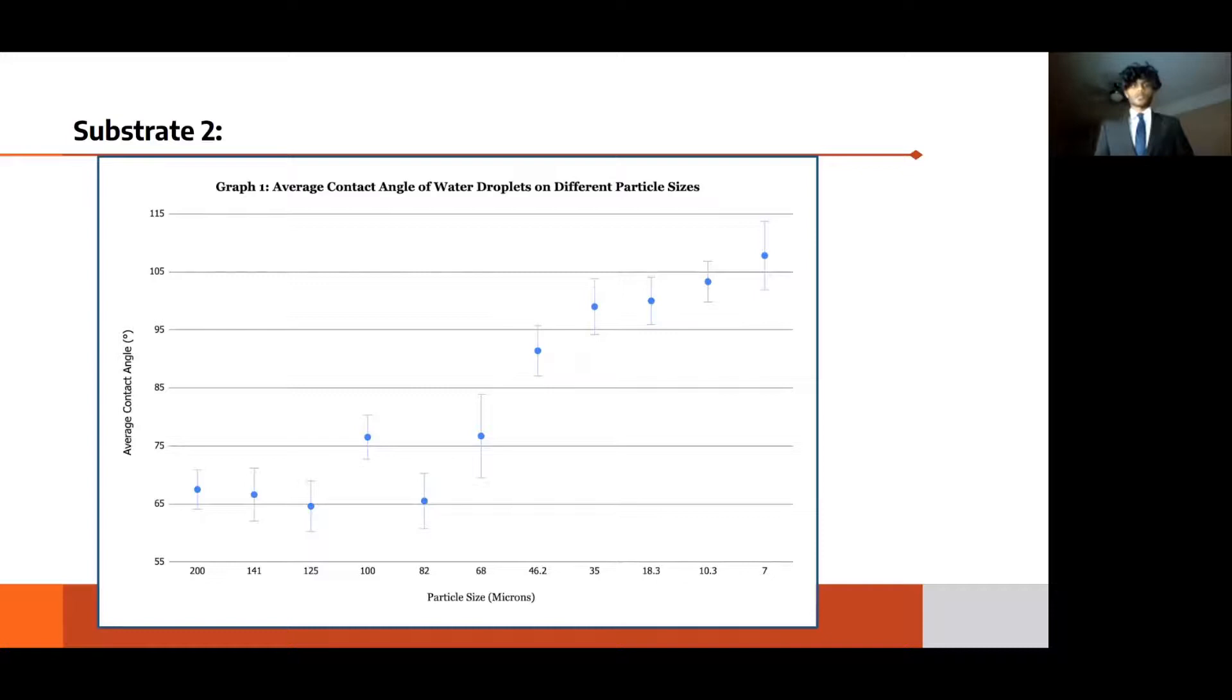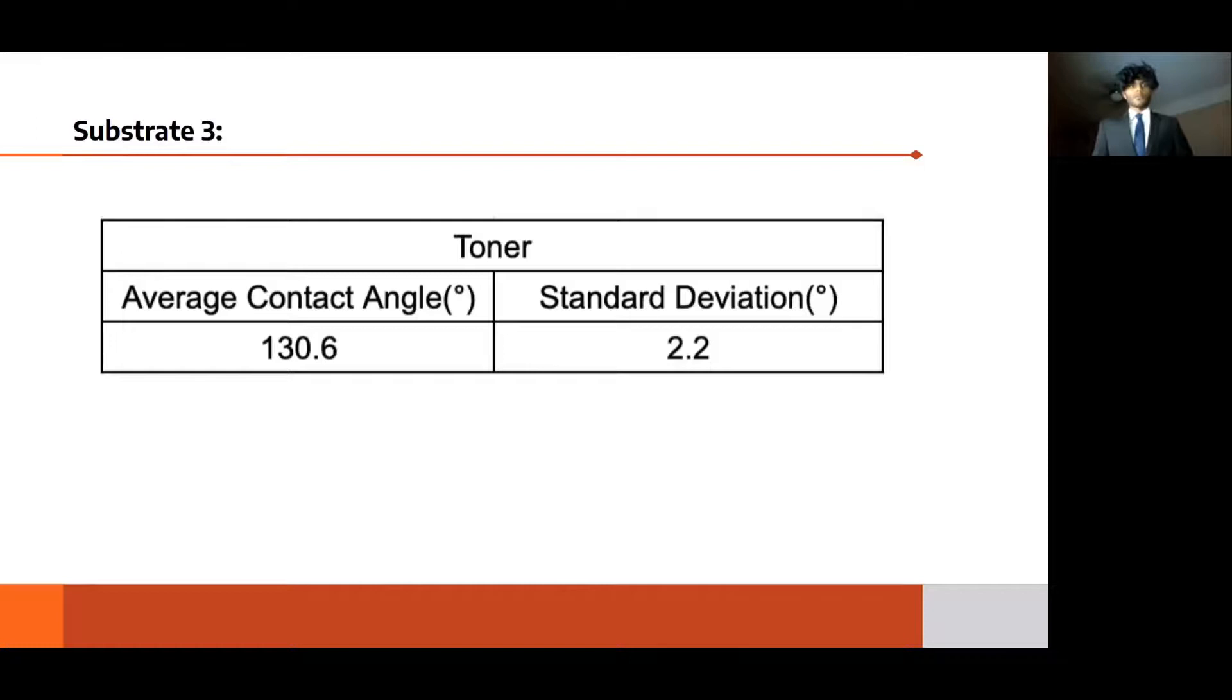The imprints from sandpapers of larger particle sizes, specifically those from 68 to 200 microns, caused an adverse effect that made the surfaces more hydrophilic. This is most likely because the air pockets formed were large and not small enough to essentially hold the water molecule droplets up. This error can be attributed to the variable pillar heights, widths, and spacings on coarser sandpapers. No data points were observed to be less than 55 degrees.